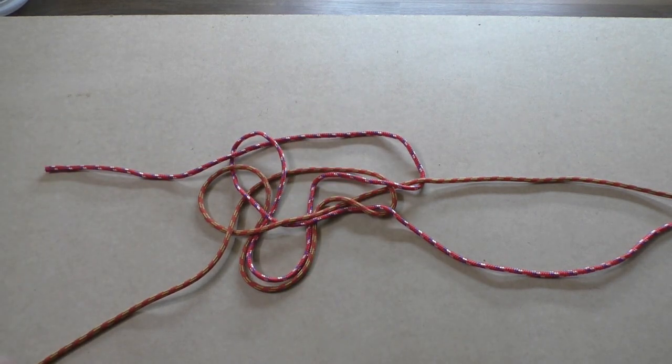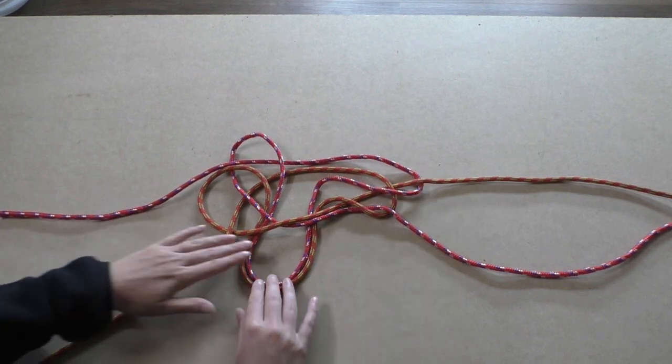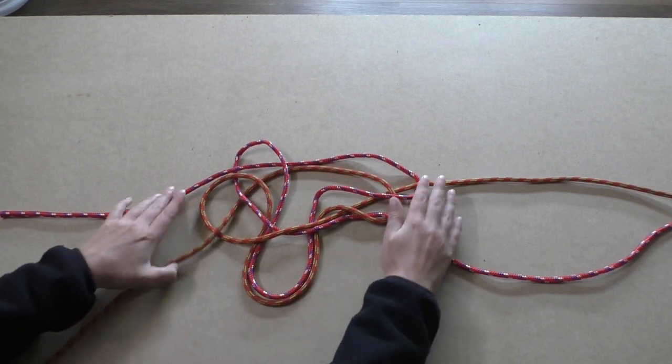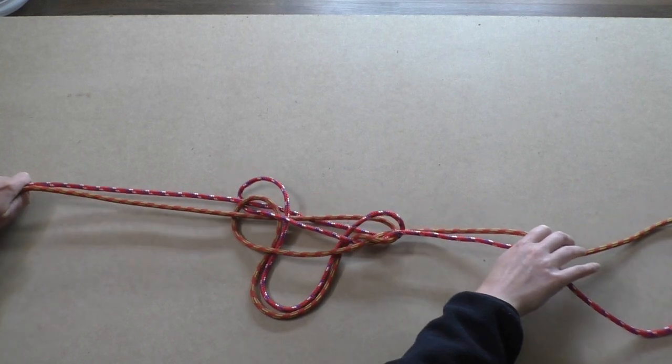Now you have three places where you have to pull to tighten the fire door knot: the loops at the bottom and all four of the loose rope ends.